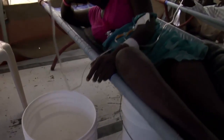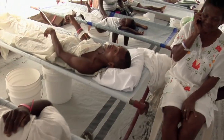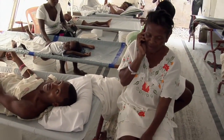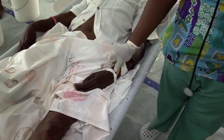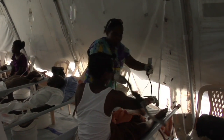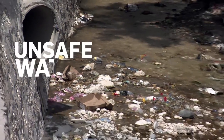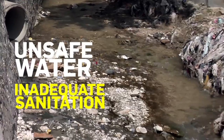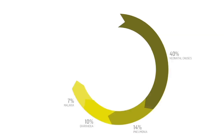Diarrhea is defined as having loose or watery stools at least three times per day. Acute cases can lead to significant fluid loss and dehydration, which may result in death or other severe consequences if fluids are not replaced. 88% of diarrheal deaths worldwide are due to unsafe water, inadequate sanitation and poor hygiene. Diarrhea is one of the leading contributors to child mortality, second to pneumonia.